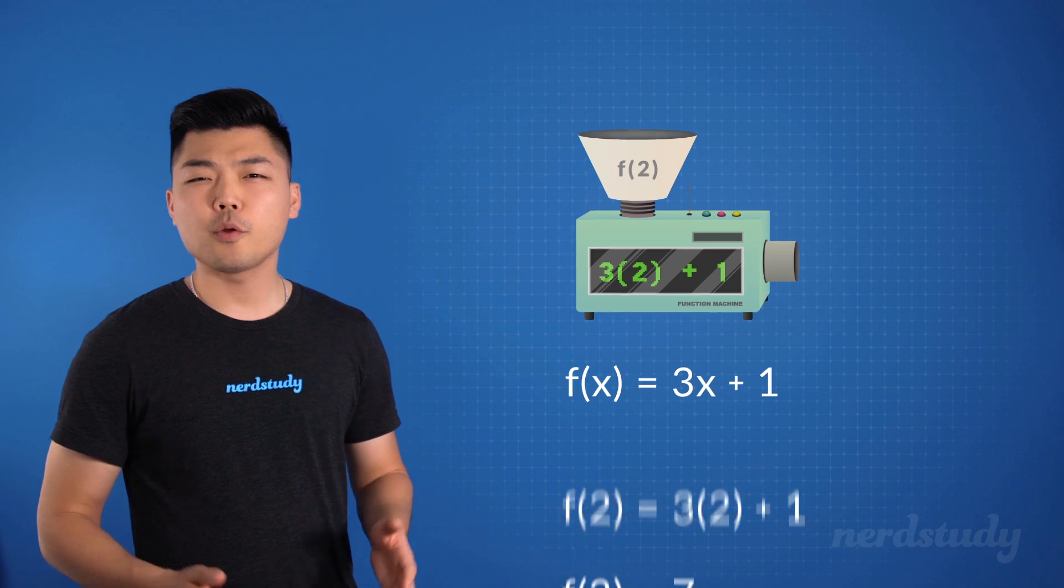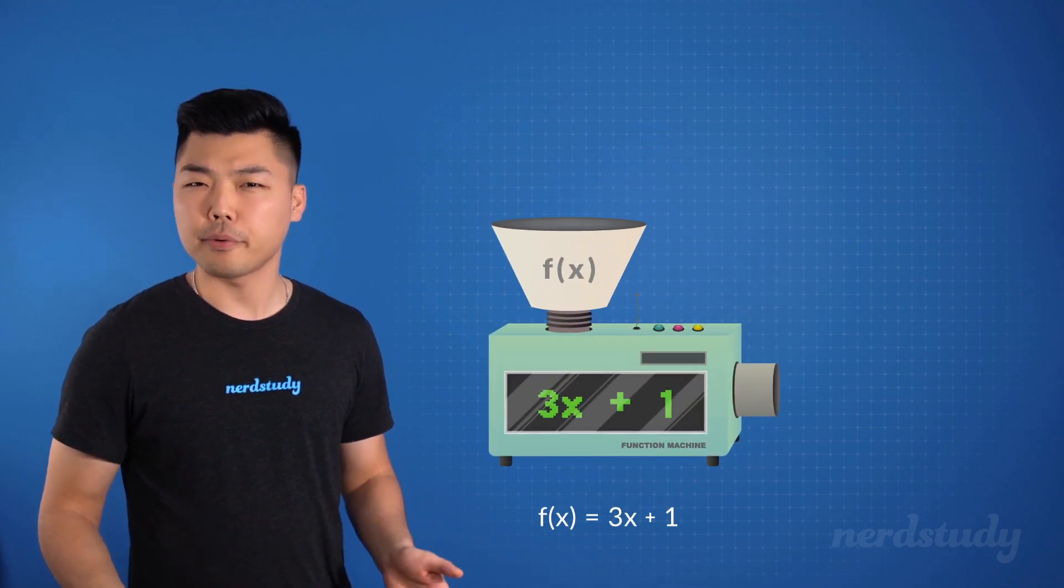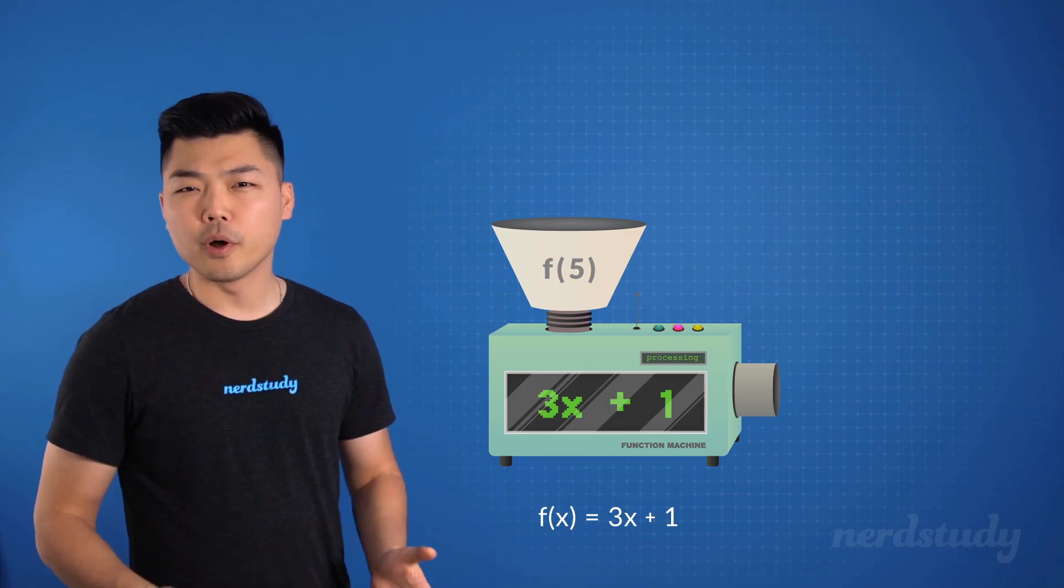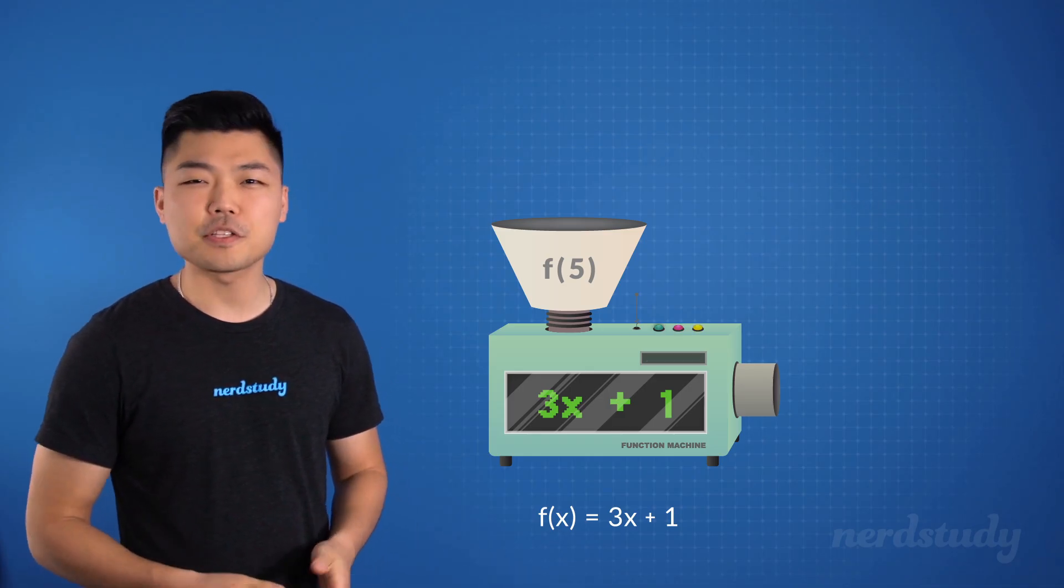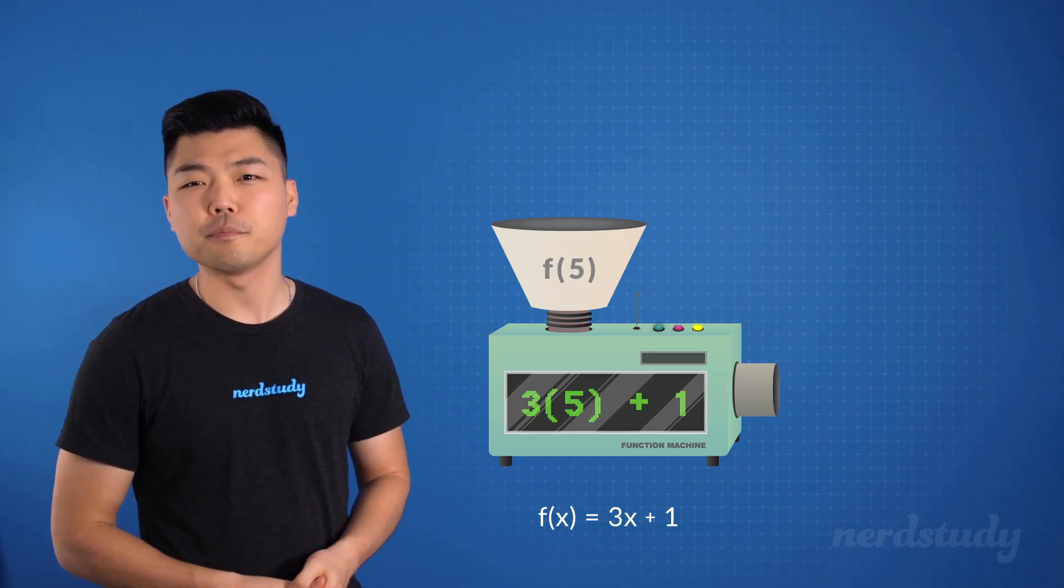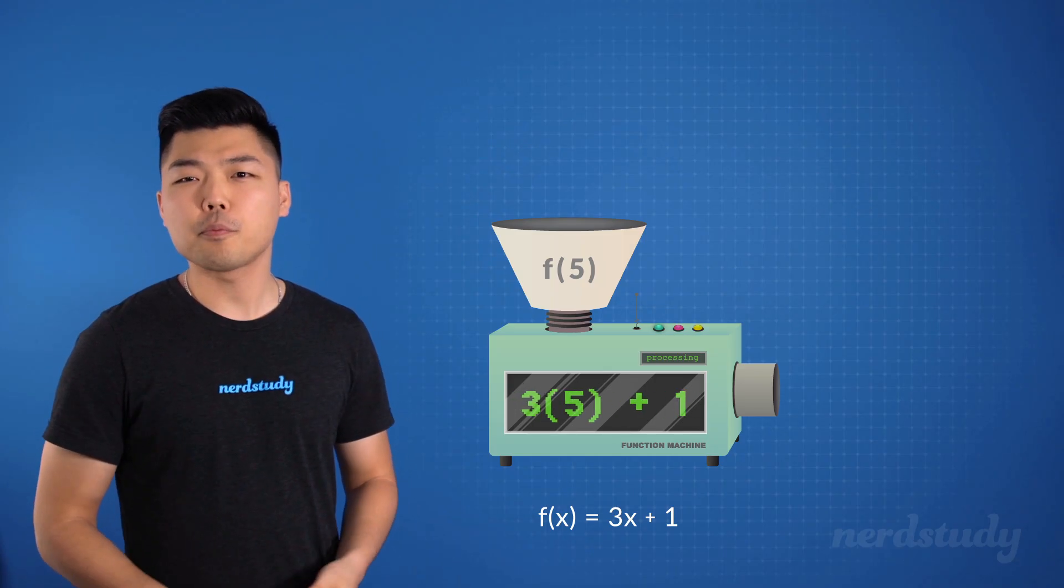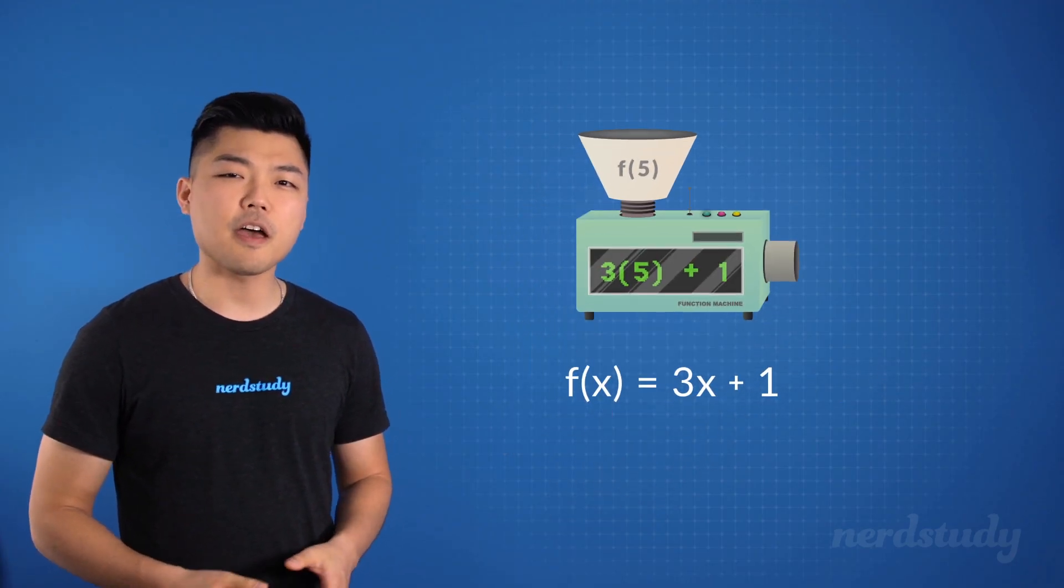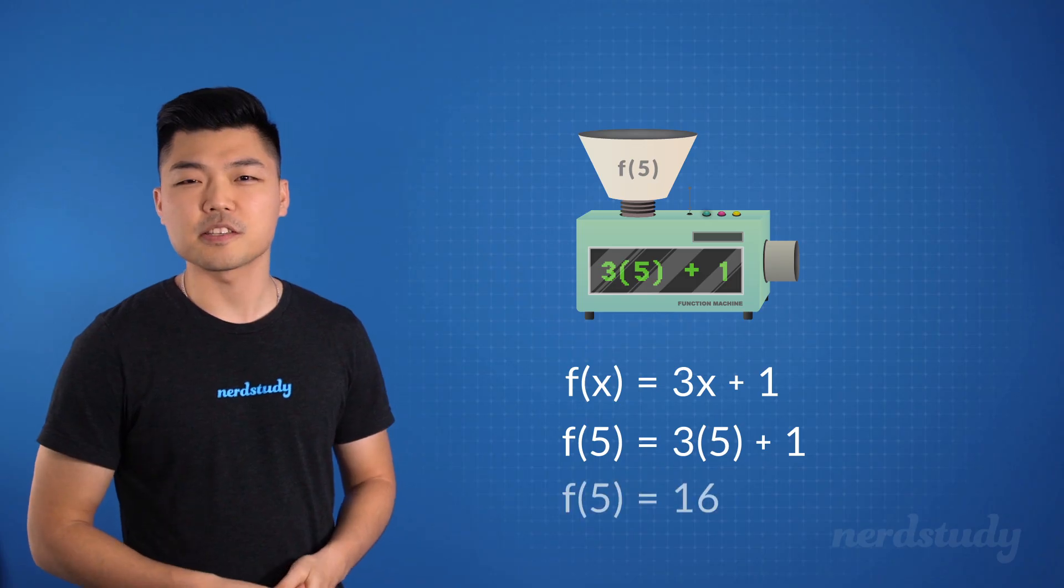Great! And what would we get for our output if we inputted 5 instead? Well, since we plug 5 into f of x, the x's in the equation are replaced with 5 as well. And after being computed, outputs a value of 16. So we find out that f of 5 is equal to 16.